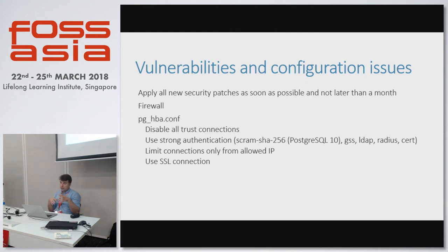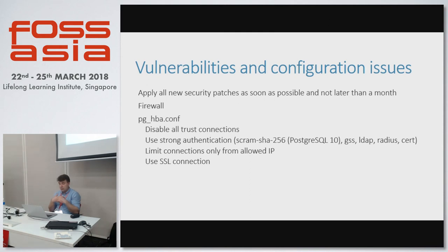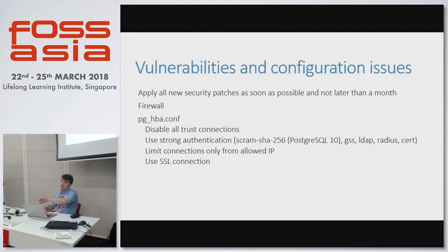In PostgreSQL there's a pg_hba.conf config file where you can set up information about connections — what protocols you support and what authentication protocols you support. Make sure you explicitly list trusted connections who can connect to PostgreSQL, rather than allowing everyone, and use stronger authentication mechanisms. PostgreSQL 10 has a new encryption mechanism based on the SCRAM protocol, where you're not sending a password over the network but only a hash. In an enterprise environment you can use a RADIUS server or LDAP for authentication instead of PostgreSQL's built-in auth. Limit connections to known IP addresses, use SSL certificates, and yes, use antivirus — it runs on Linux too.